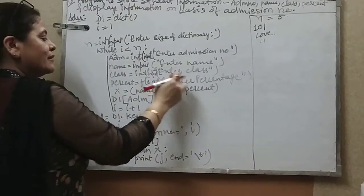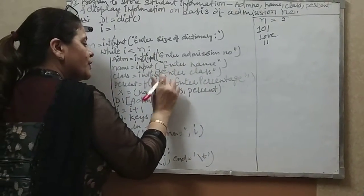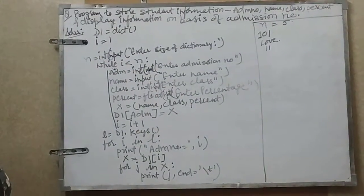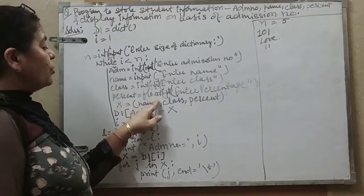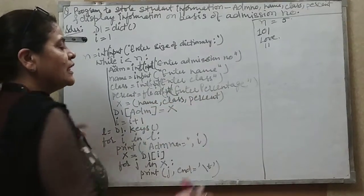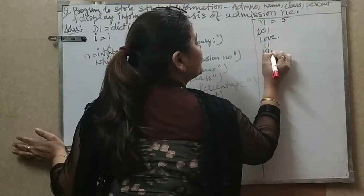Then percentage: enter float input. I have to enter the value of percentage. Float input, enter percentage. Let the percentage be 79.5.